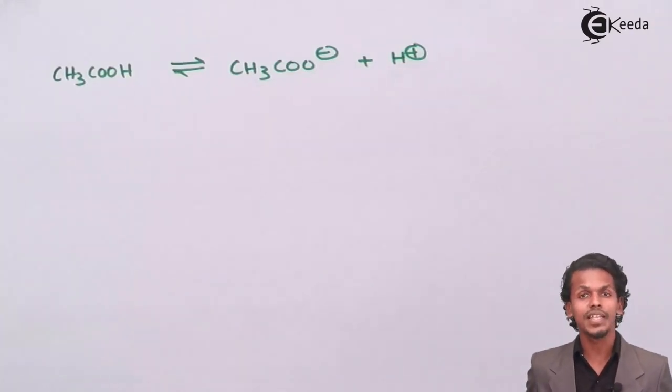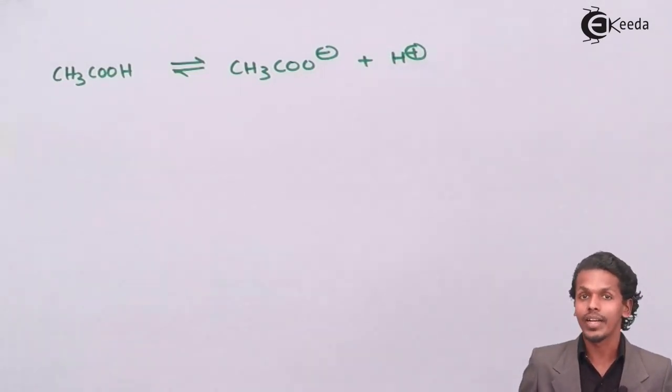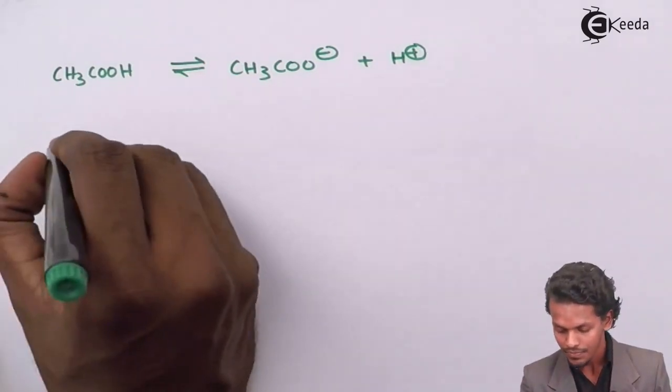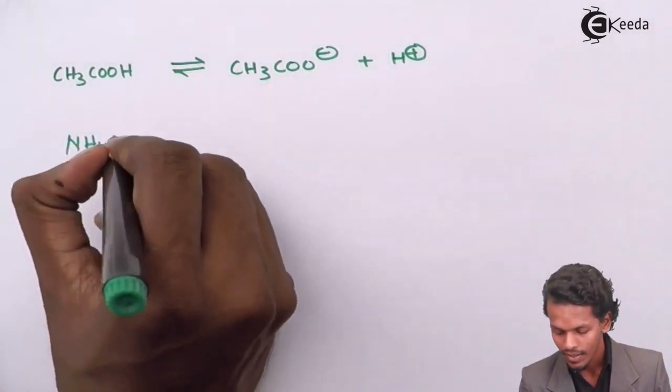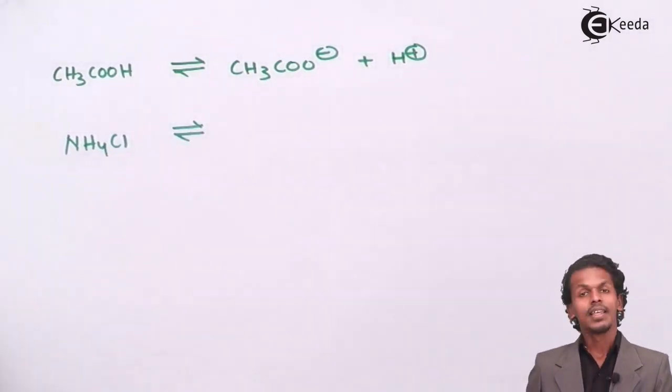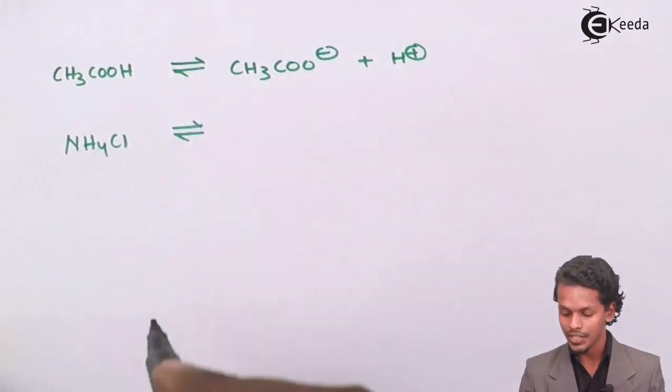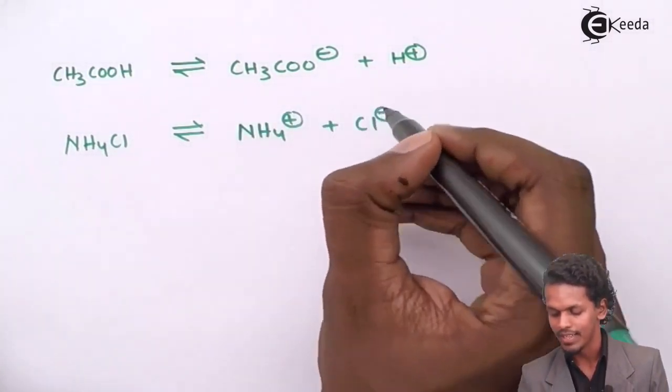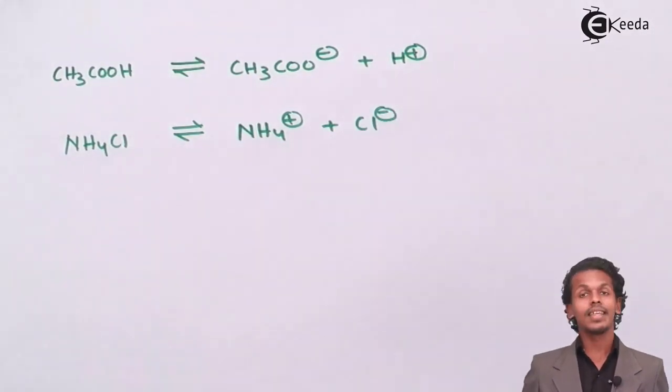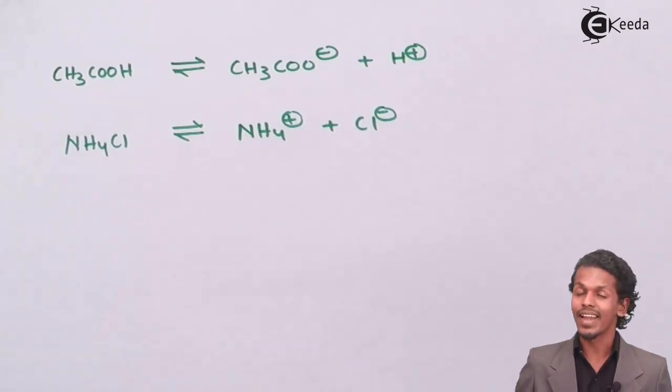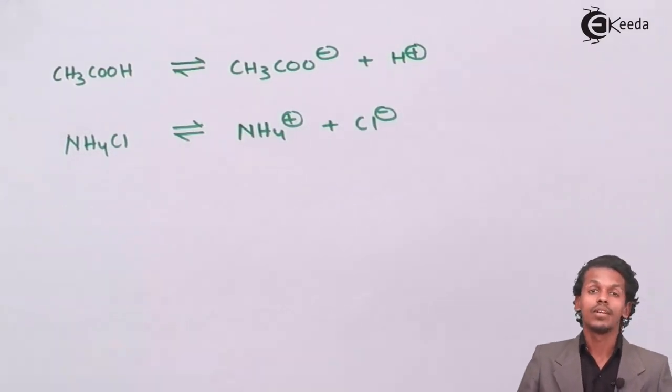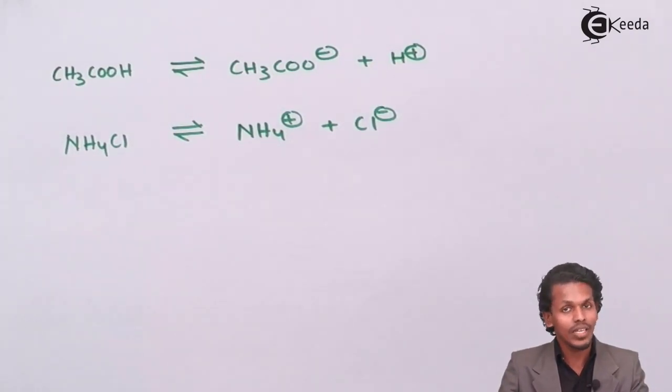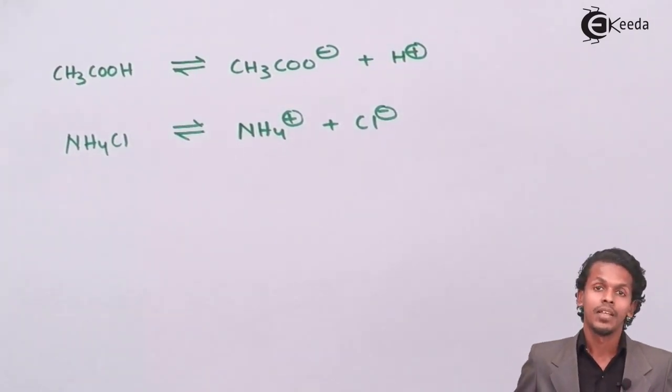And they don't help conduction of electricity in a very efficient way and hence they are known as weak electrolytes. Talking about another example, another example that I could take is NH4Cl. Even this NH4Cl dissociates into NH4+ plus Cl-. They don't dissociate 100% or they don't dissociate completely and hence because of that they do not conduct electricity very efficiently and hence they are known as weak electrolytes.